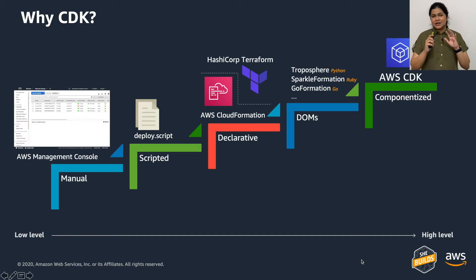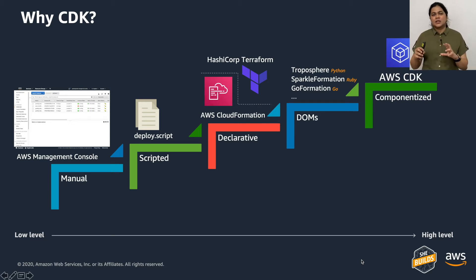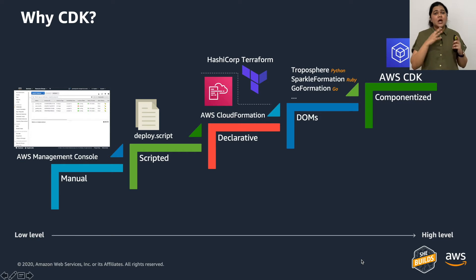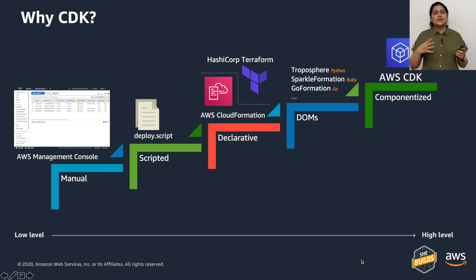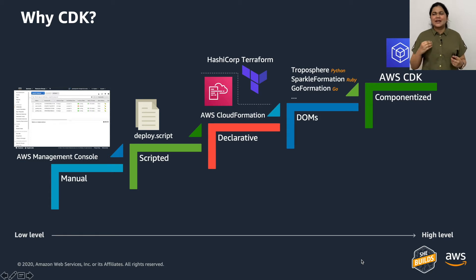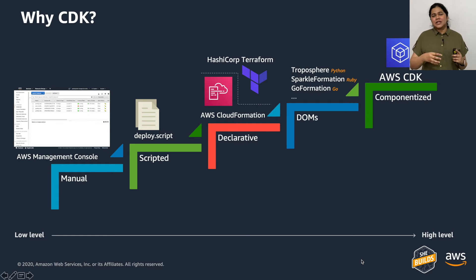Before you understand CDK, you need to understand why you need it. Whenever a customer starts working on the AWS platform, they start with the AWS management console — with a few simple clicks you can create compute, storage, databases, and networking resources. But when your application gets more complex, customers move to writing their own scripts. Writing scripts was tedious: you had to handle errors, retries, and failures — a lot of boilerplating.